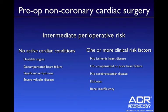In the pre-op non-coronary cardiac surgery patient, the patient must be at intermediate perioperative risk. This means they cannot have any active cardiac conditions such as unstable angina, decompensated heart failure, significant arrhythmias, or severe valvular disease. They must also have one or more clinical risk factors including ischemic heart disease, compensated or prior heart failure, cerebrovascular disease, diabetes, or renal insufficiency.